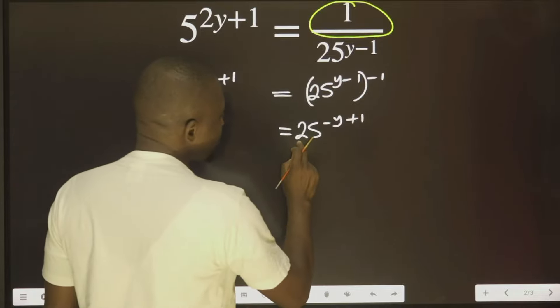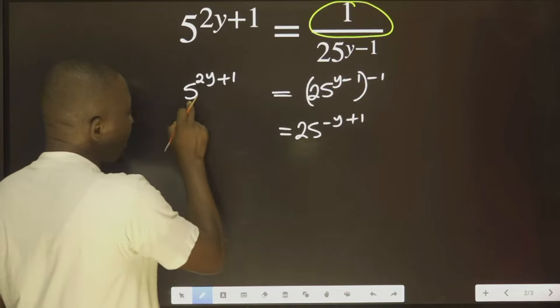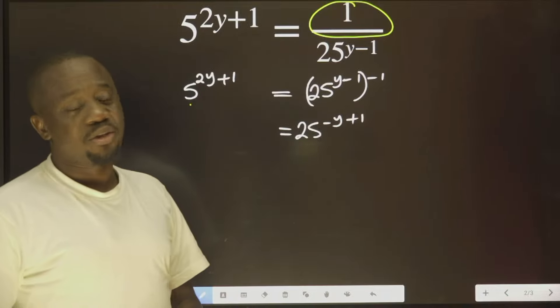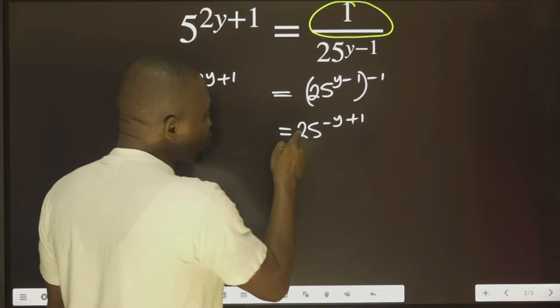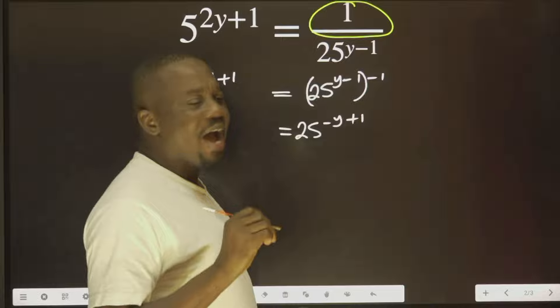The next thing we need to do is break this down. What is 25? In terms of 5, it's 5 raised to power 2. So I'm going to replace this 25 with 5 raised to power 2.